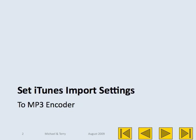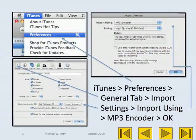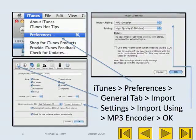Set iTunes import settings to MP3 encoder. Go to iTunes, Preferences, General tab, Import Settings, Import Using, MP3 encoder, then click OK.